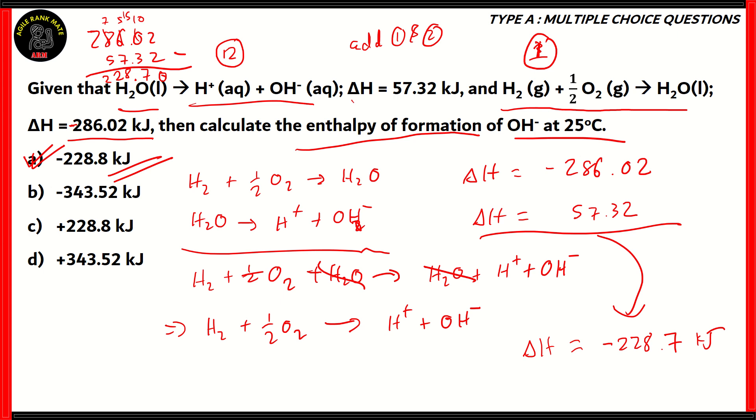And the closest answer to that is option A minus 228.8 kilojoules. So therefore, option A turns out to be the right option. The other options B and C are incorrect because they involve adding the two quantities. And option C has a plus sign, which is also incorrect. So, the right answer is option A minus 228.8 kilojoules.